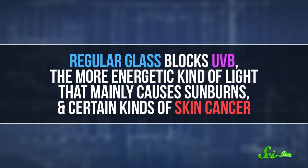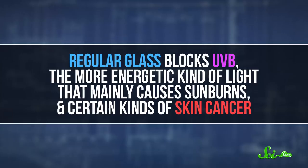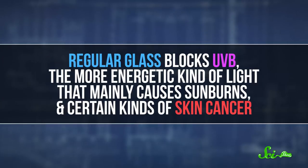Another surprising thing you can get sun damage through is glass. Scientists split the UV that hits the Earth's surface into two categories, UVA and UVB. Regular glass blocks UVB, the more energetic kind of light that mainly causes sunburns and certain kinds of skin cancer. So you're mostly safe from sunburns behind a window. But that's about where the good news ends.